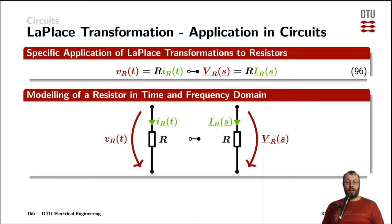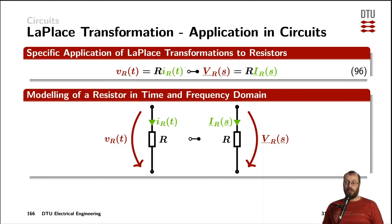We have looked at how we can apply the Laplace transformation to signals, to sources, to voltages and currents. Now we can go one step further and look at what happens to the signals when they are applied to impedances — to resistors, to capacitors, and to inductors.